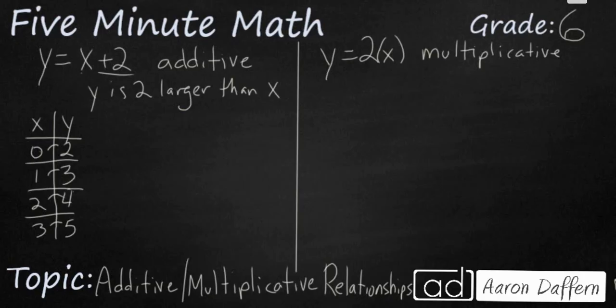So instead of y being 2 larger than x, in this case, since it's multiplied by 2, y is going to be twice x. You're going to take your x and you're going to make it twice as large. That's going to get your y because you're multiplying times 2.